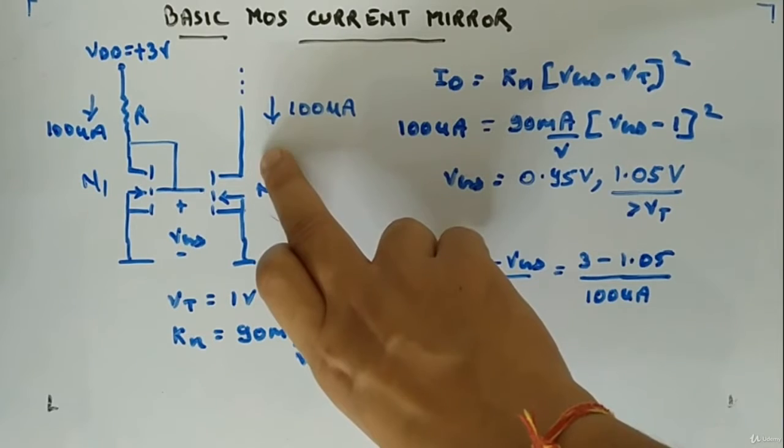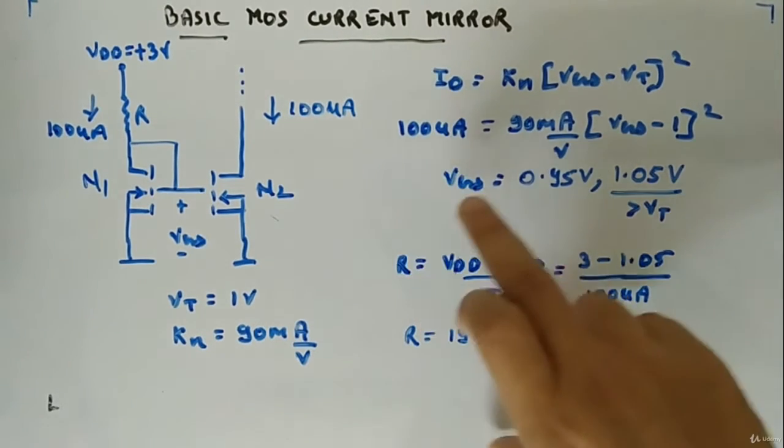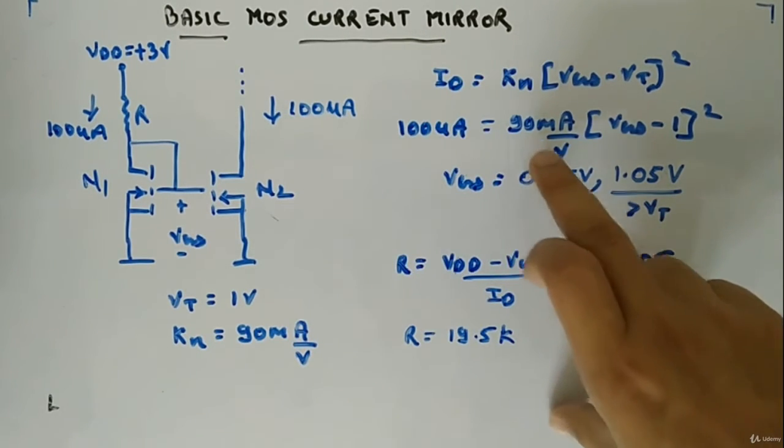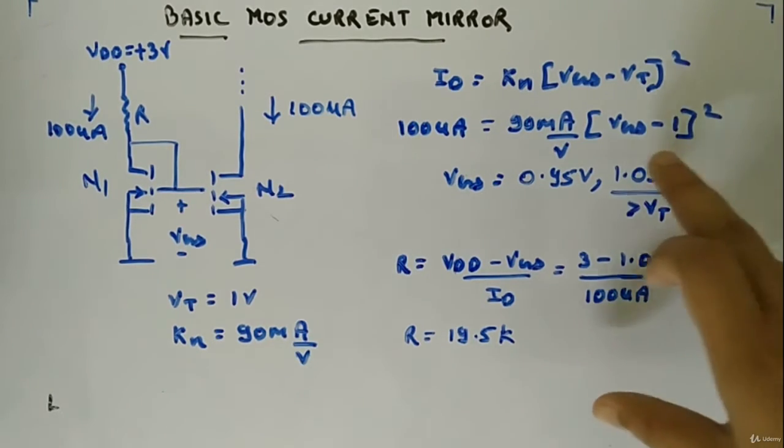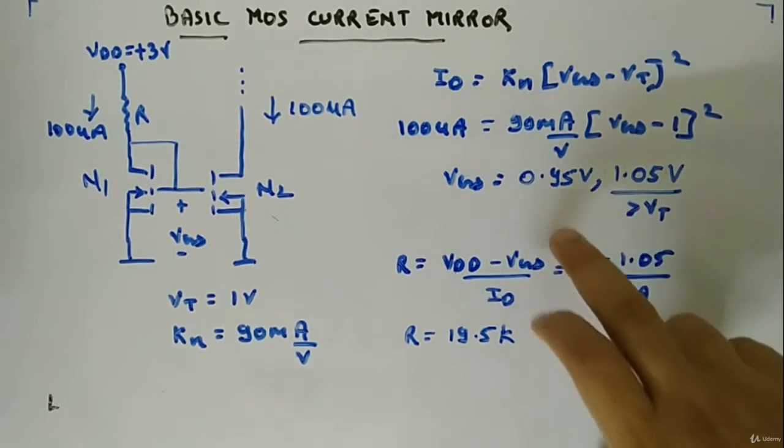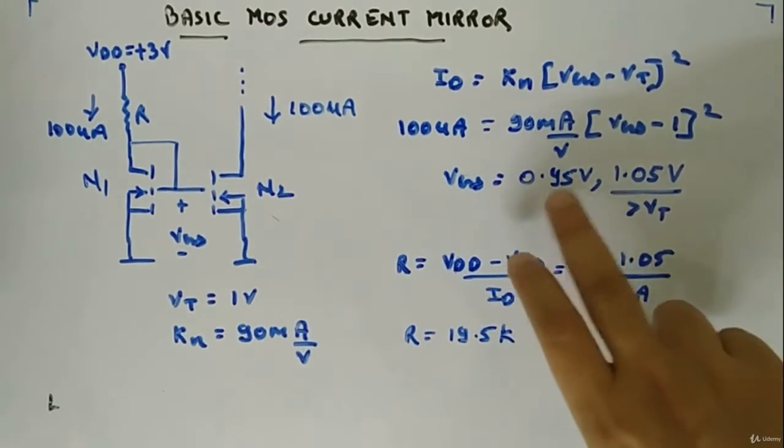Now ID or I naught we want hundred microampere, KN is 90 milliampere per volt, VGS we don't know, 1 volt VT whole square.